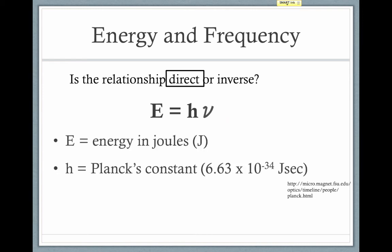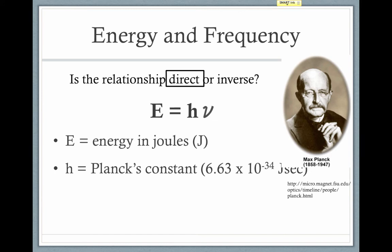Here, energy is measured in joules. H is a constant called Planck's constant. It's named for Max Planck. And its value is 6.63 times 10 to the negative 34th joule seconds. And frequency is measured in hertz again, or 1 over seconds.